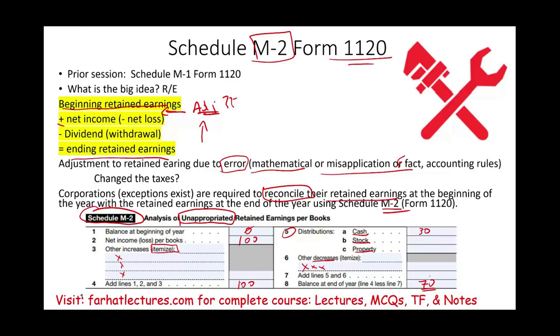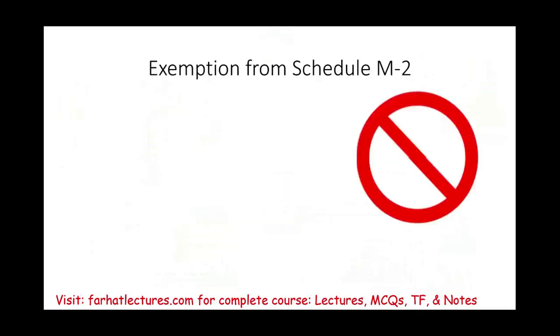Now, next year, what you need to know, the $70 becomes your beginning retained earnings. Then you go through Schedule M-2. Now, as I said, corporations are required to do so, but there are exceptions.